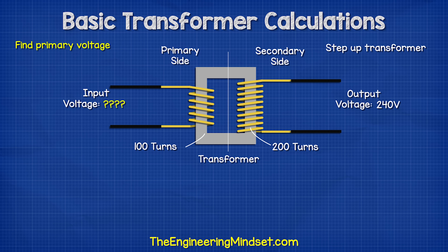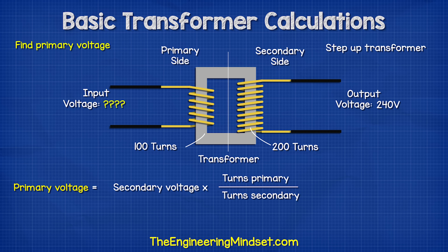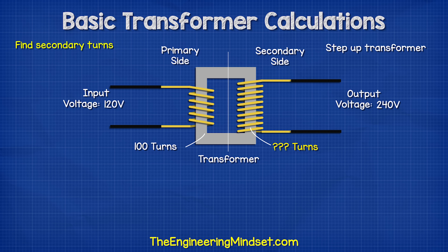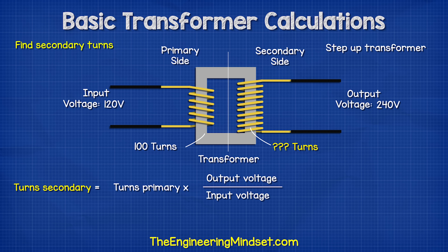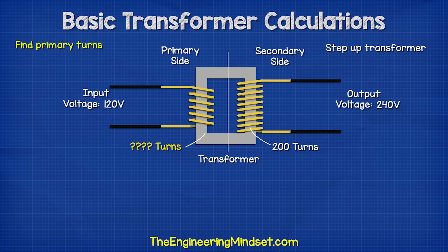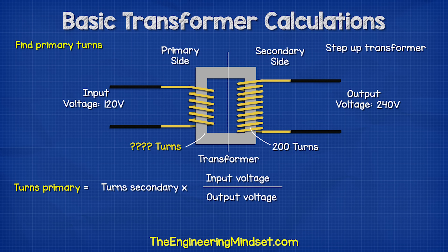What if we only knew the output voltage and the amount of turns? We could find the input voltage with this formula. If we wanted to find the number of turns on the secondary side and we knew the voltage and primary turns, then we could use this formula. If we wanted to find the number of turns on the primary, then we could use this formula.